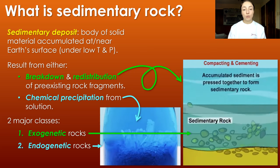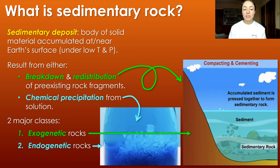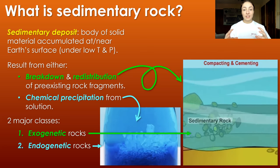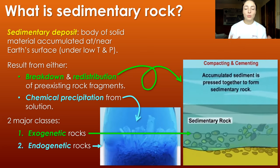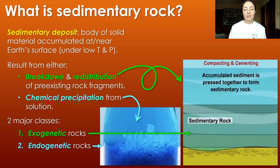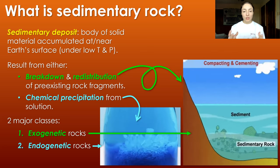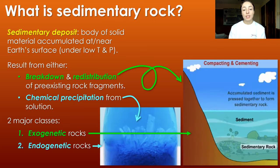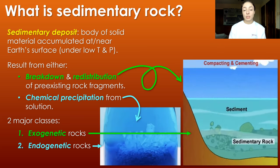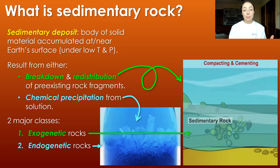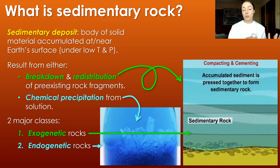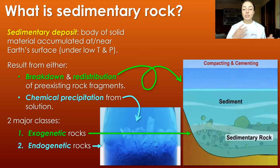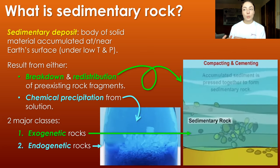Exogenetic rocks are those that form by the breakdown and redistribution of pre-existing rock fragments. Endogenetic rocks are those that form within the place that they accumulate. Things like chemical precipitations are endogenetic because they accumulate right where they're precipitating from solution. The breakdown and redistribution of pre-existing rock fragments involves transport of those fragments from somewhere else, so it's exogenetic — coming from somewhere else and accumulating somewhere it wasn't formed.